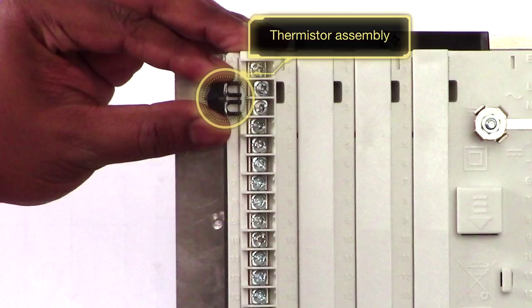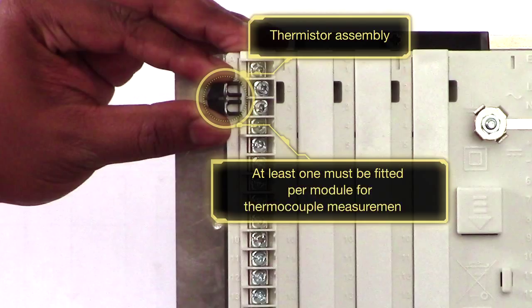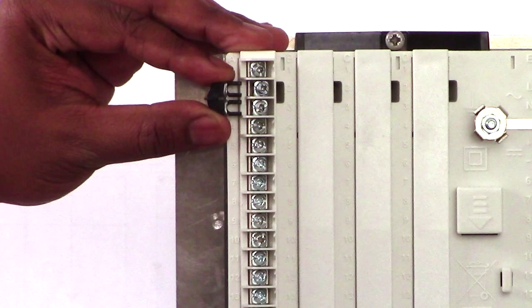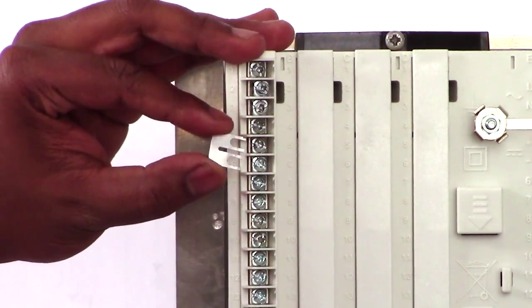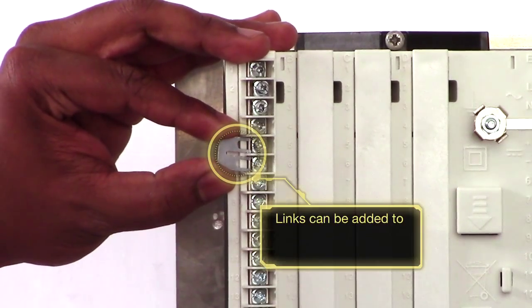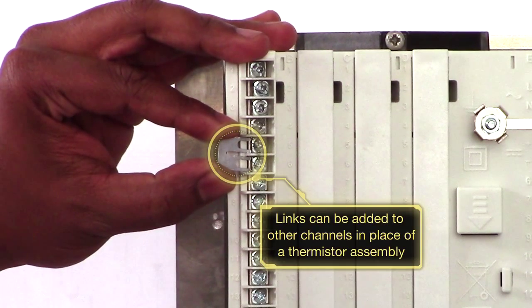The RVG200 requires that a minimum of a single thermistor assembly is fitted per module for thermocouple measurements. Any other thermocouple measurement channels require a link fitting to the terminals in place of a thermistor. These are also supplied five per analog module fitted.